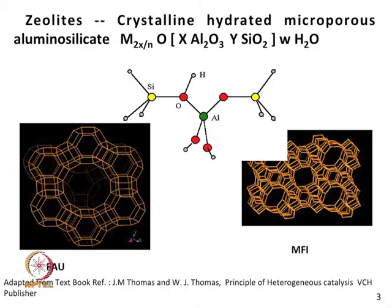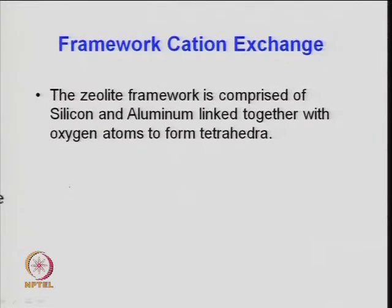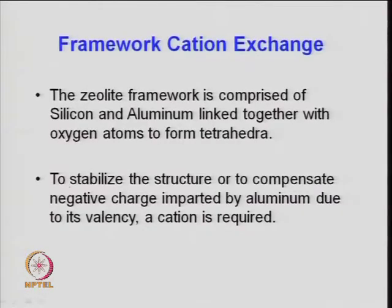We need to look at primary and secondary building units. The primary building unit is one structure forming — for example, a 6-membered ring, though there may be 4, 8, or 10-membered rings as well. These make a framework.